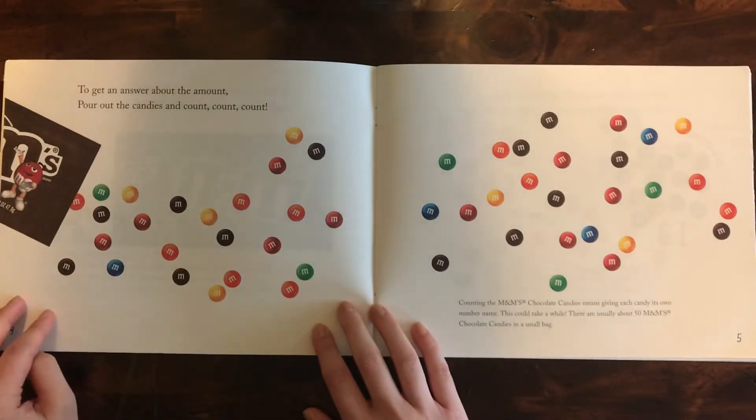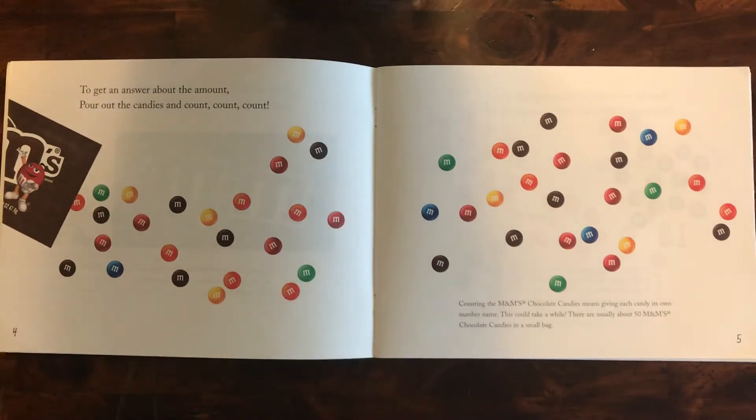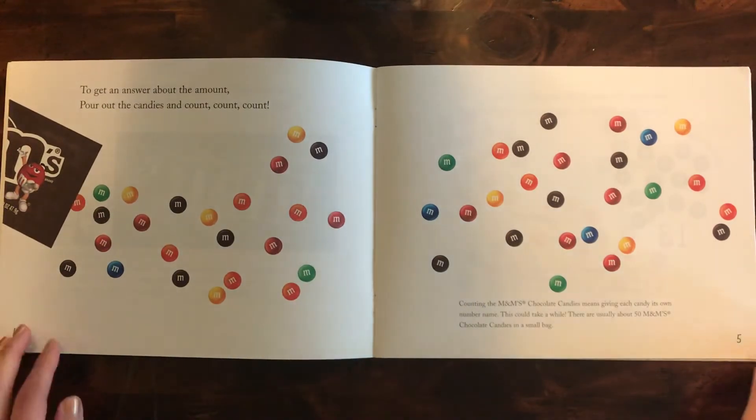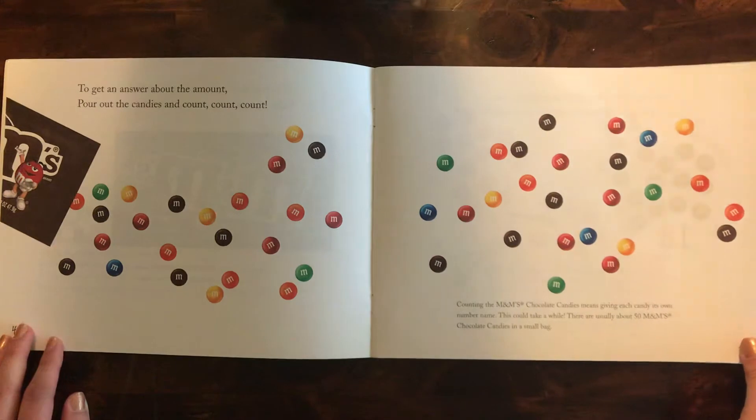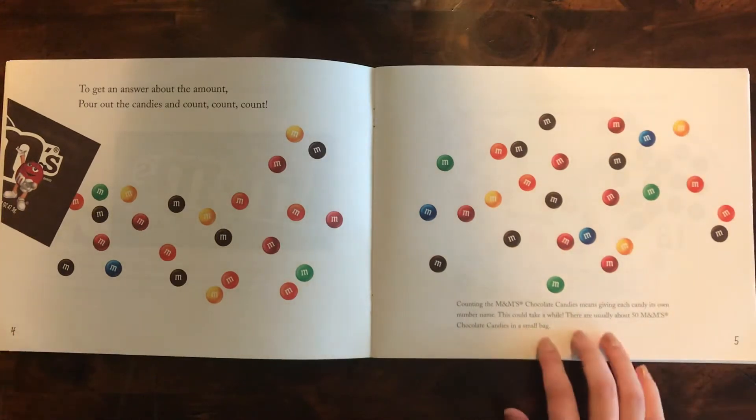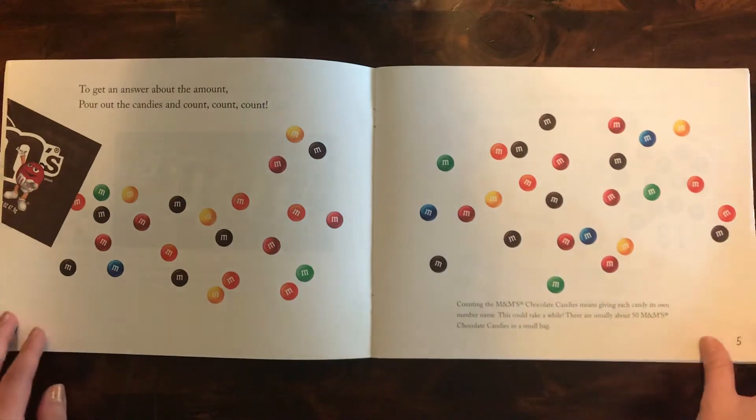To get an answer about the amount, pour out the candies and count, count, count. Counting the M&M's chocolate candies means giving each candy its own number name. This could take a while. There are usually about 50 M&M's in a small bag.